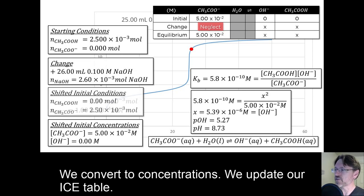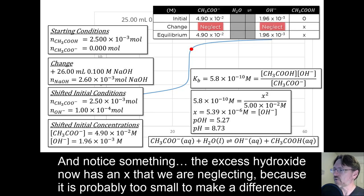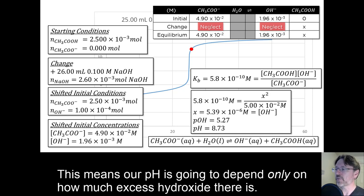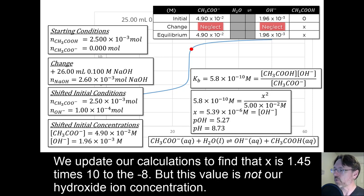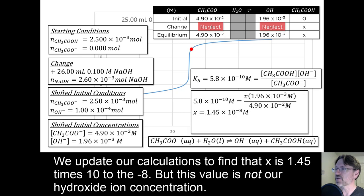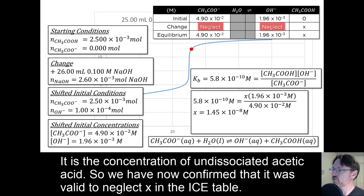We convert to concentrations. We update our ice table. And notice something. The excess hydroxide now has an x that we are neglecting, because it is probably too small to make a difference. This means our pH is going to depend only on how much excess hydroxide there is. We update our calculations to find that x is 1.45 times 10 to the negative eighth. This value is not our hydroxide ion concentration. It is the concentration of undissociated acetic acid. So we have now confirmed that it was valid to neglect x in our ice table.